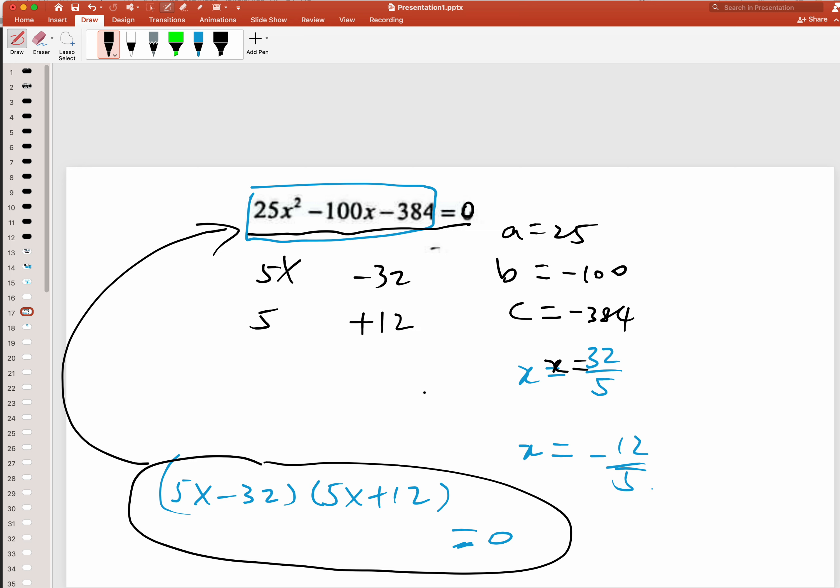So what do you get? This one you get 60x, this one you get minus 160x. So this adds up to minus 100x. Yeah, correct. So basically these two are the factors. That's how you work backwards and then get the factorization.